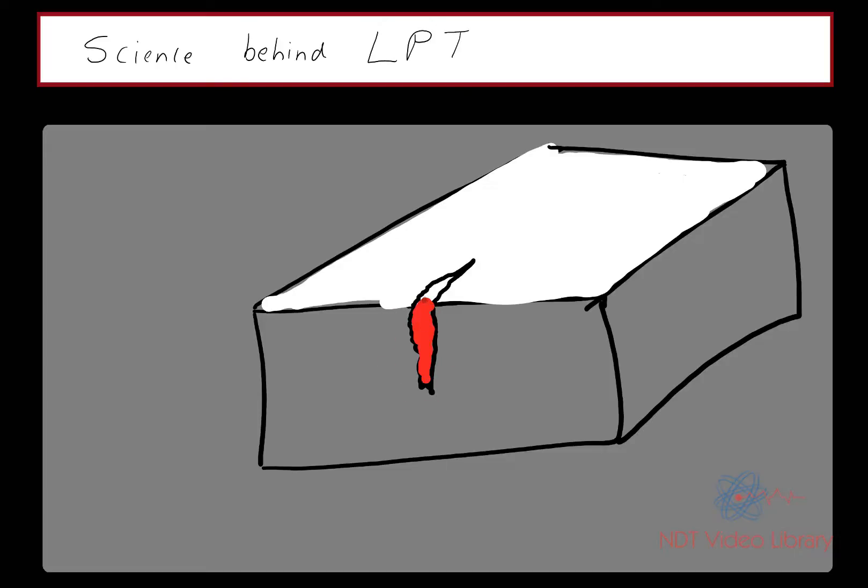During the development time, the penetrant that is trapped inside the crack starts to come out due to the oozing effect. The developer starts sucking the penetrant that's trapped inside the crack out, making it visible at the top surface. It's just like a blotting action, and that's how you are able to see an indication even though it's not visible to the naked eye.